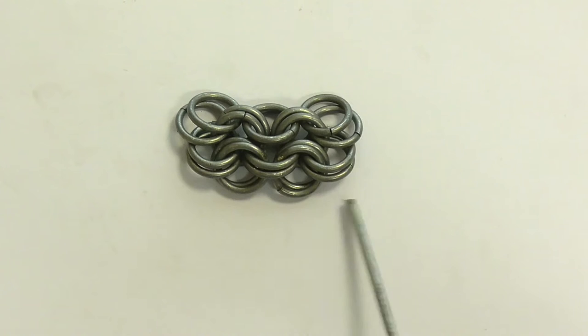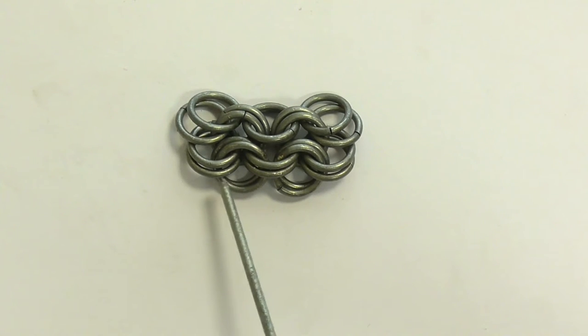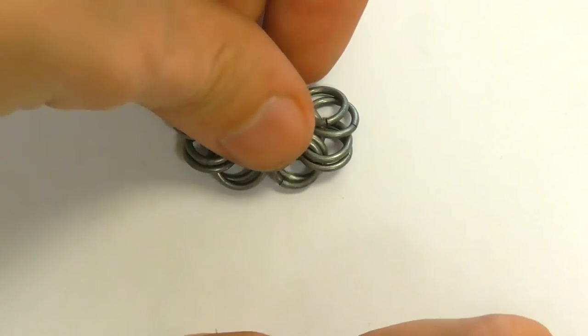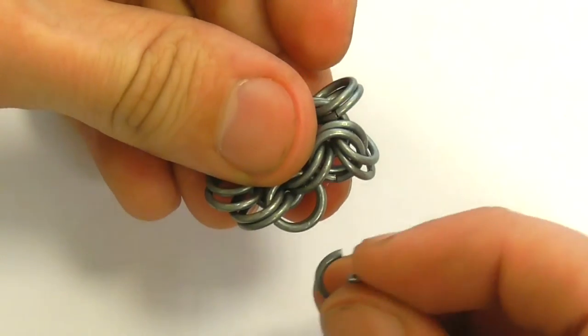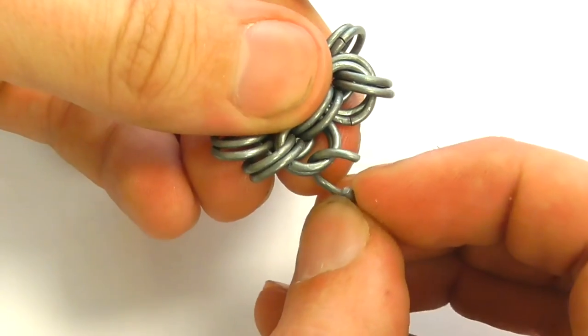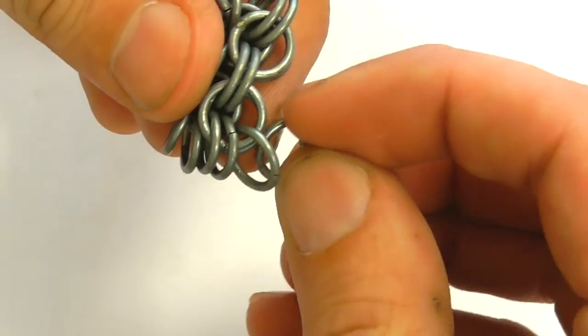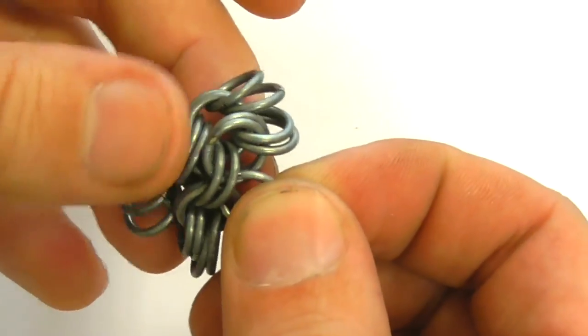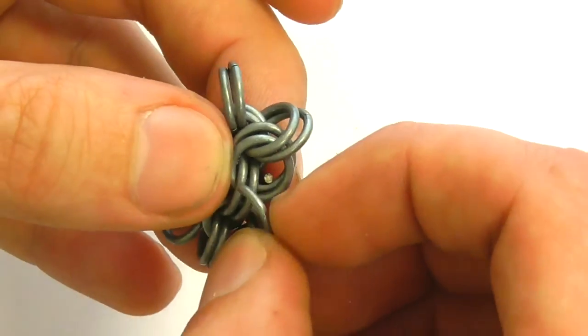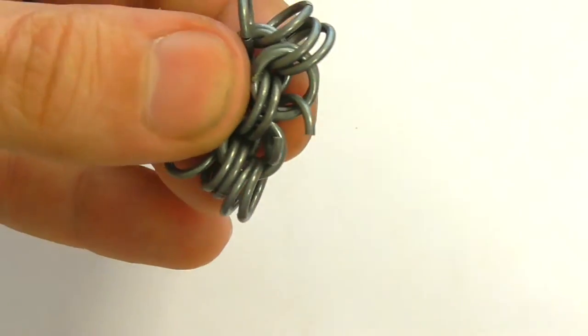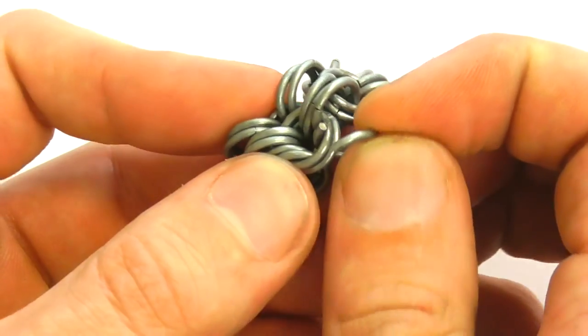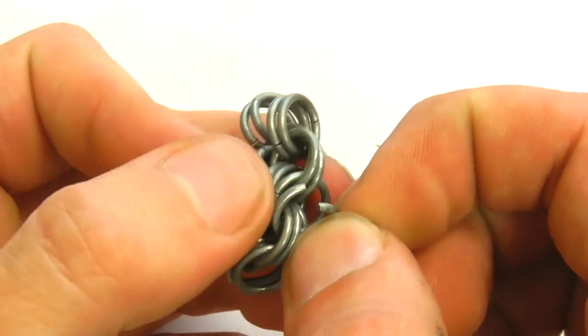For the next row we have to add six more rings. Two rings here, two rings here and two rings here. One, this one and this one.